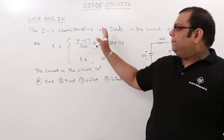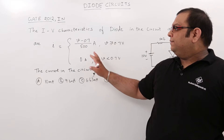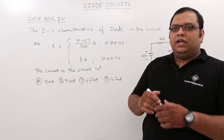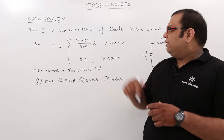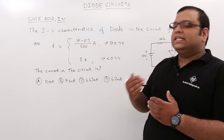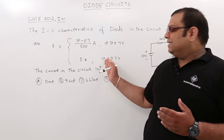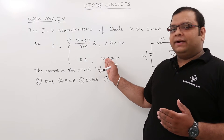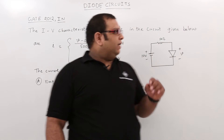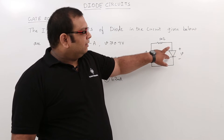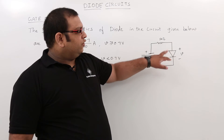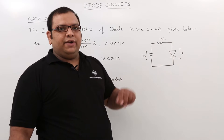If you observe the IV characteristics: I = (V - 0.7) / 500 amperes. When V is greater than 0.7, that means the diode is forward biased. When V is less than 0.7, the diode is reverse biased. Here V is the voltage across the diode, and according to this voltage we can determine the current through the diode.